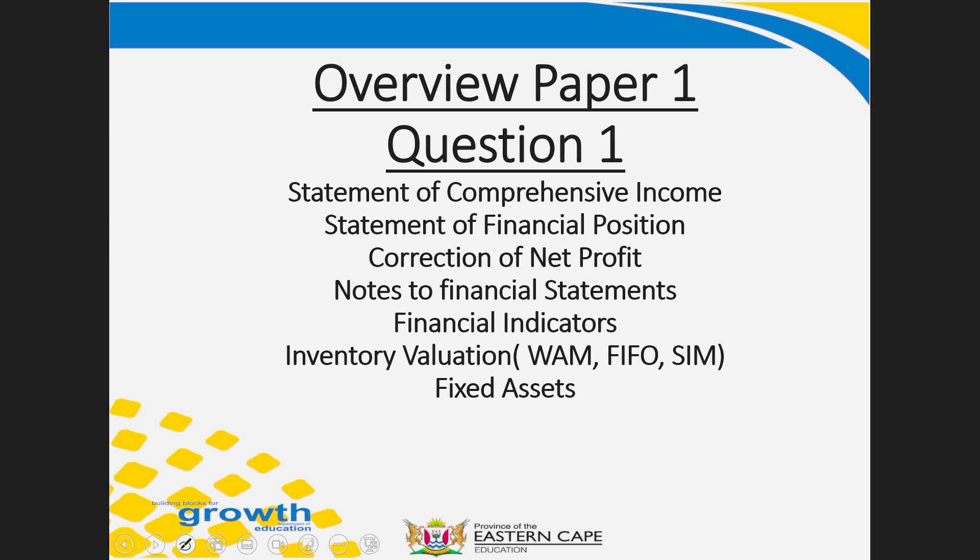When we delve deeper into Paper 1, specifically Question 1, the following topics are generally asked: the statement of comprehensive income, statement of financial position, the correction of net profit, notes to the financial statement, financial indicators, inventory valuation, the FIFO method, specific identification method, and fixed assets. Remember, they will not ask you all of these at the same time — they will give you a mixture.